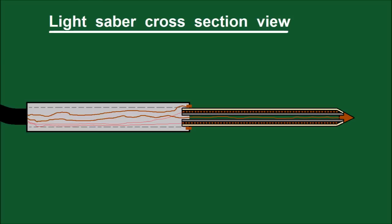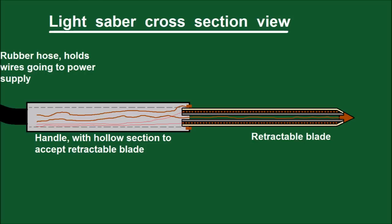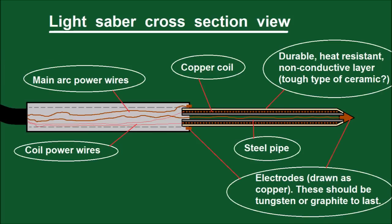This is a cross-section view of the lightsaber. The first versions would have power cables leading to a backpack power supply. The handle is hollow and can accept the retractable blade, and the inside is electrically insulative. The outside of the handle can be sturdy metal, like aluminum.